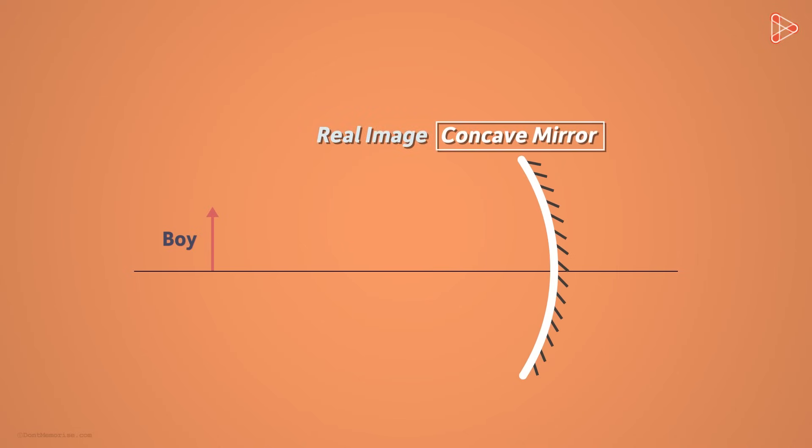So what is the real image then, and how are they formed? Let's replace this plane mirror with a spherical concave mirror. Why? It's because real images can be formed by concave mirrors.